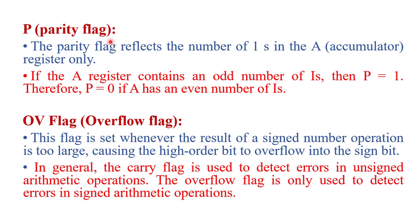The Parity Flag bit is set whenever the result of any arithmetic operation contains an odd number of ones. If the number of ones is even, the parity flag bit is reset. The parity flag reflects the number of ones in the accumulator register, since the result of any arithmetic or logic operation is stored there. If that result contains an odd number of ones, the parity flag is set; otherwise it is reset. So: if the accumulator register contains an odd number of ones, parity flag is 1; if even, it is 0.